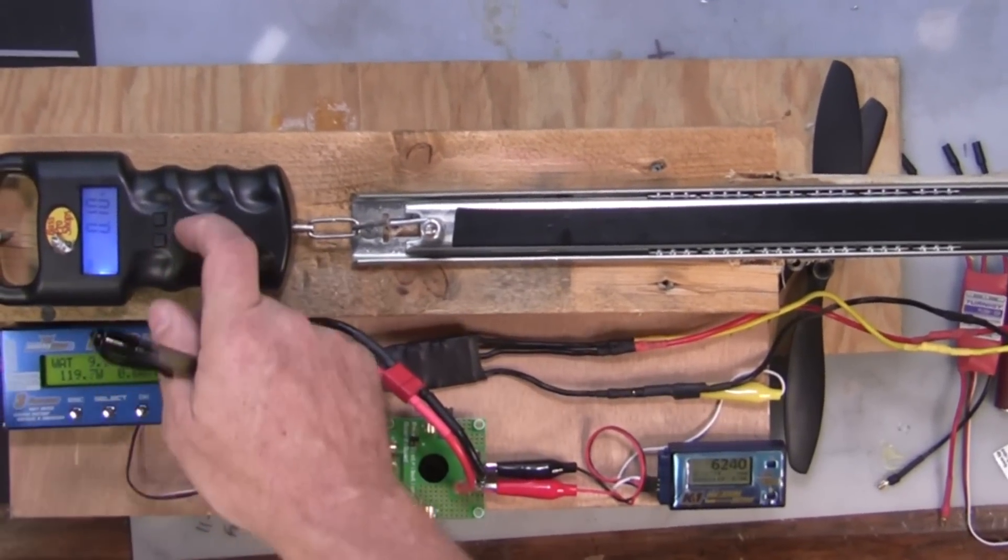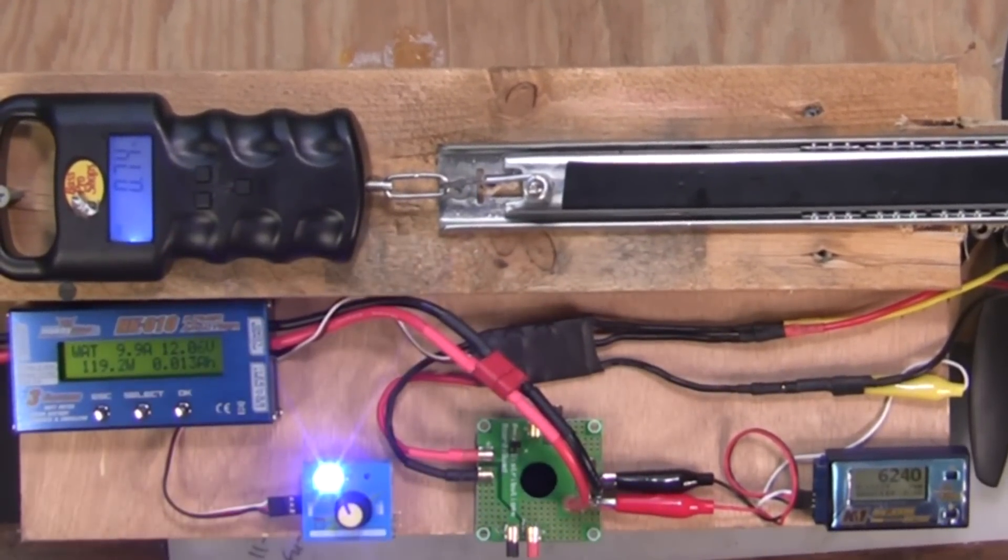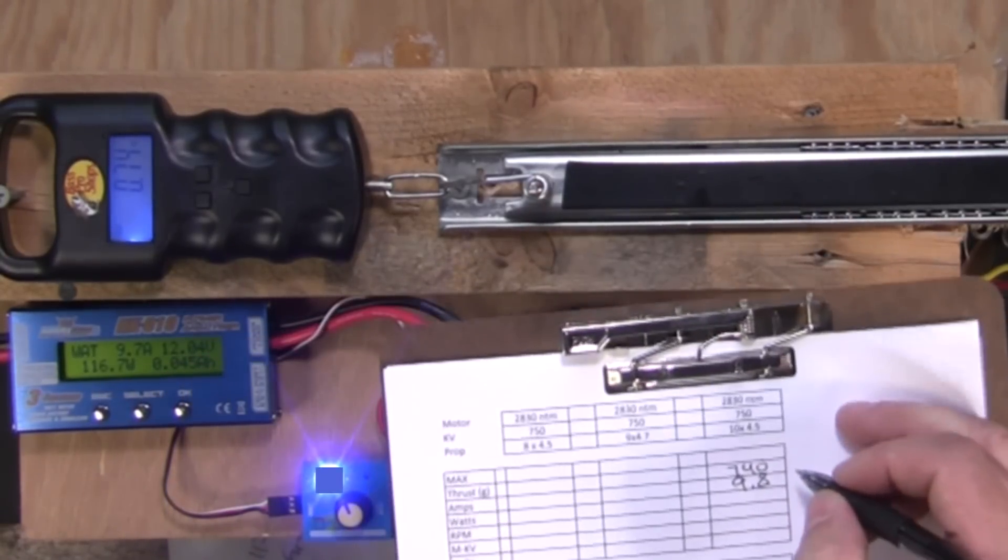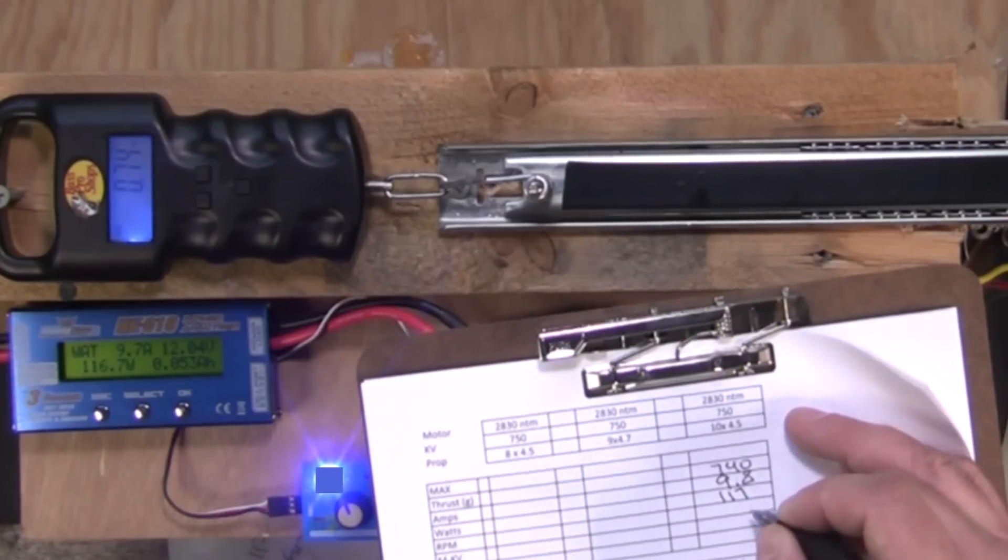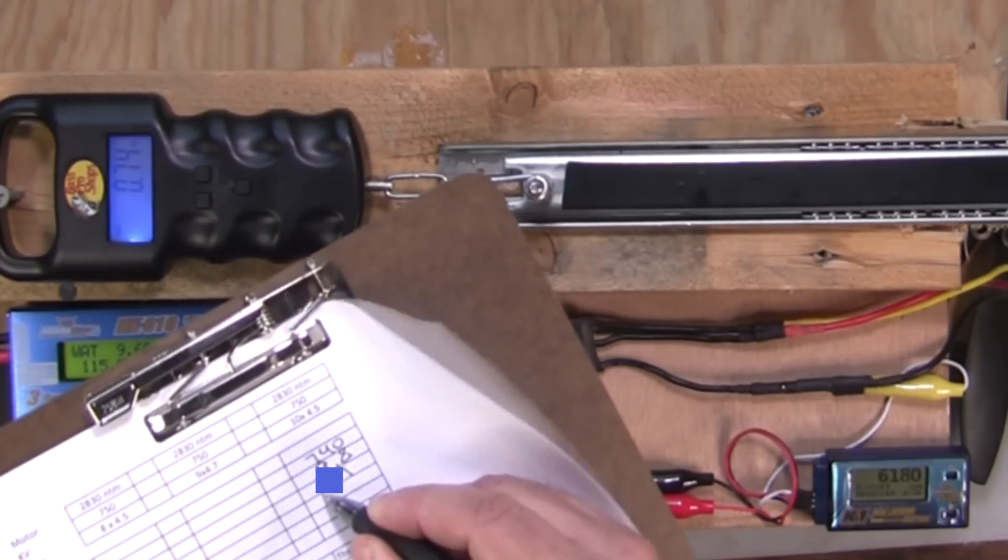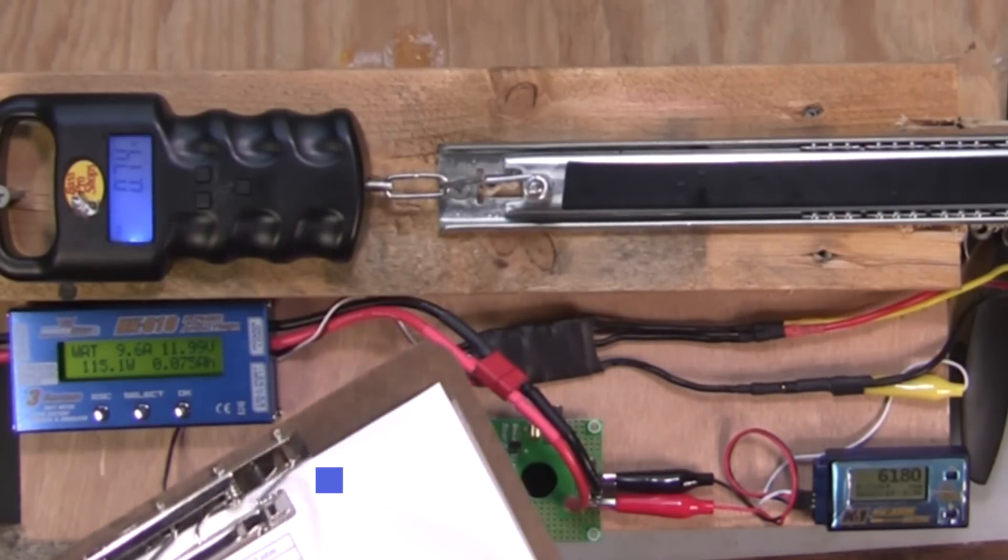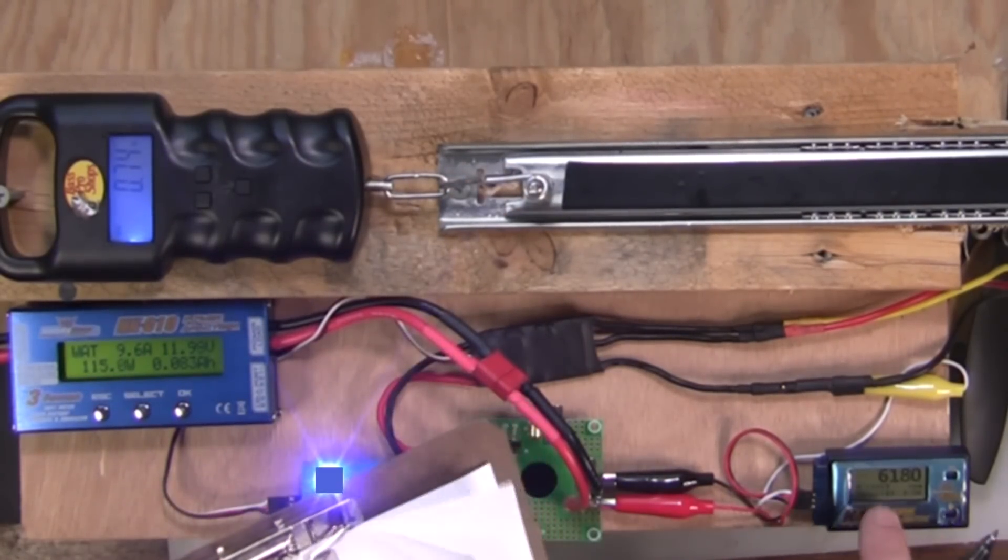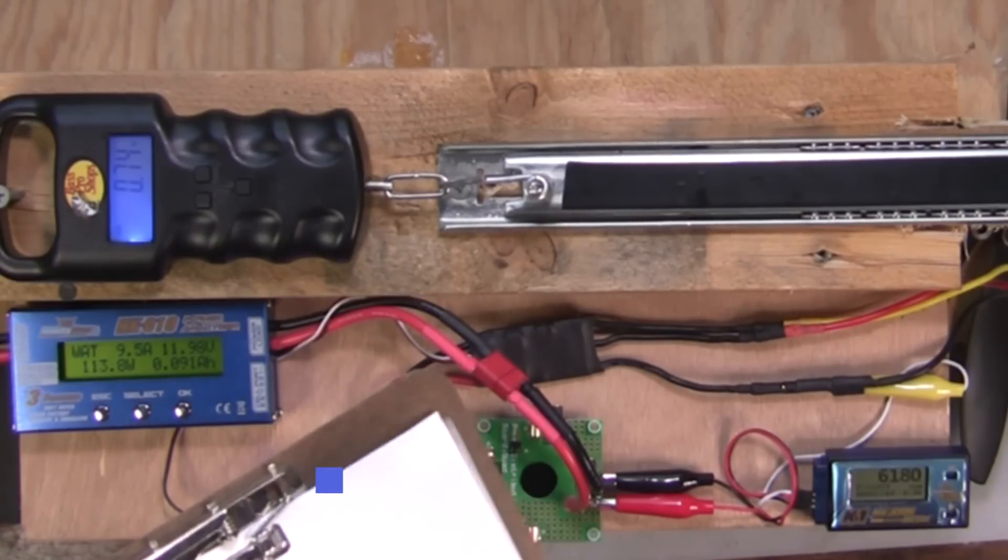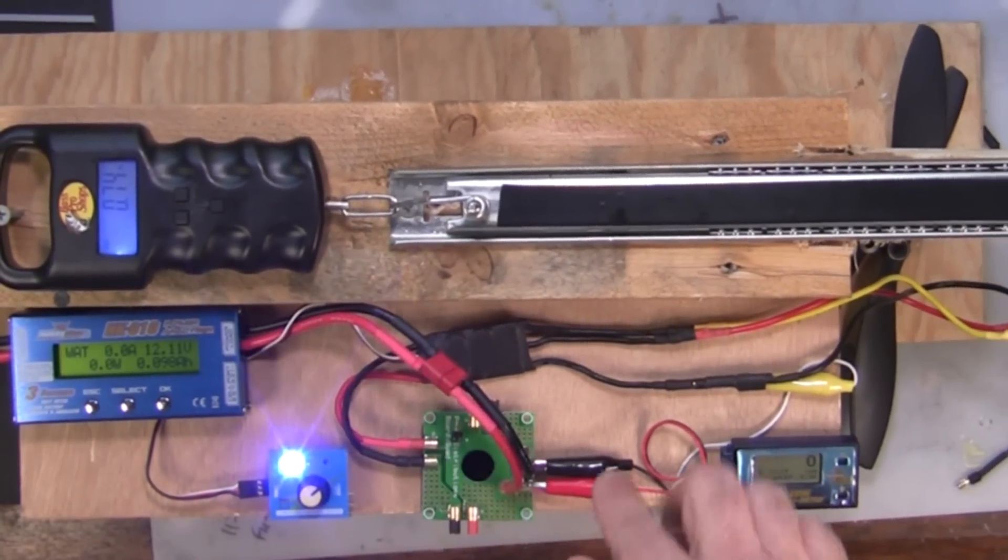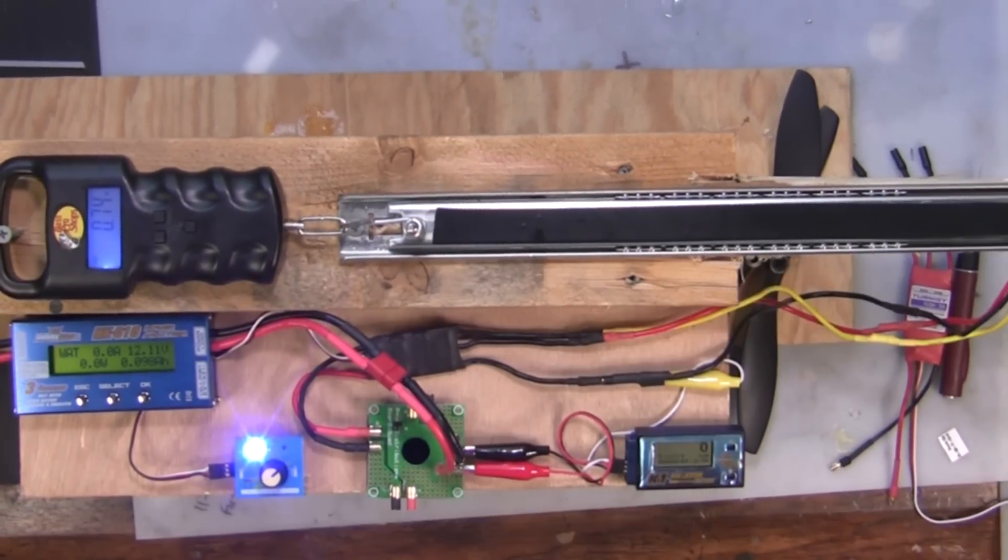Okay. So we've got 740 grams of thrust, 9.8 amps, 117 watts, RPM is 6240, KV is 512, and our voltage is 12.03. Okay, good. Okay. So that tells us how much power maximum that we're going to get from this combination.